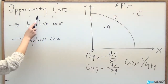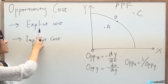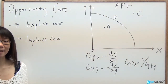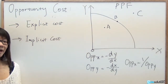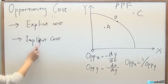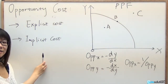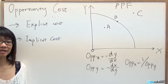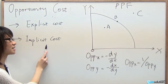Opportunity cost has two parts. The first part is explicit cost — the price of the burger that you spend out of pocket is your explicit cost. The second part is implicit cost — the joy that you gave up from consuming a burger instead of consuming Coke is the implicit cost.